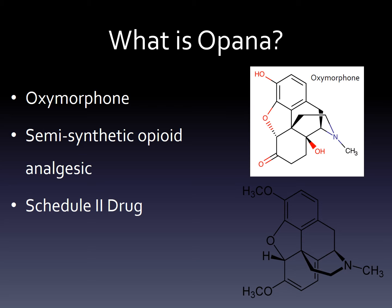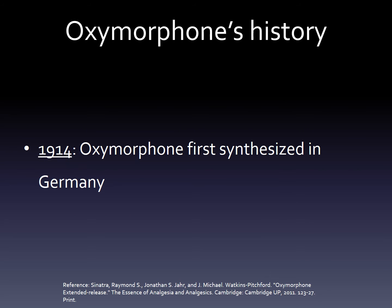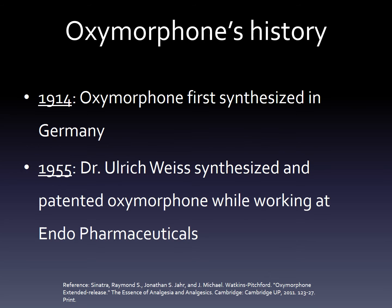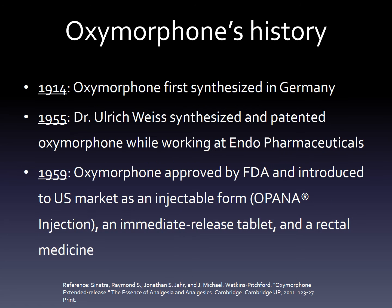Let's talk about the history of Opana. Oxymorphone was first synthesized in Germany in 1914, but it took many years before the drug was patented. In 1955, Endo Pharmaceuticals patented Opana for its use as an analgesic. Four years later, the drug was approved by the FDA as a Schedule II drug, and it entered the U.S. market in three forms: an injectable version, an immediate release tablet, and a rectal medicine.